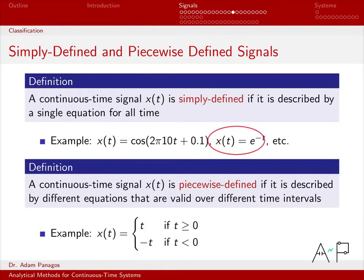Similarly, the signal x of t equals e to the minus t. If that's the signal we're working with, unless something is said otherwise, we assume that it's valid for all time t. And this just single equation is what we need.